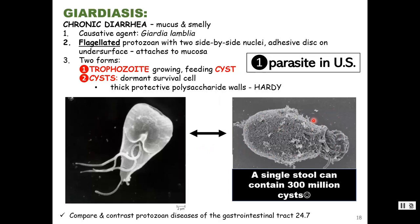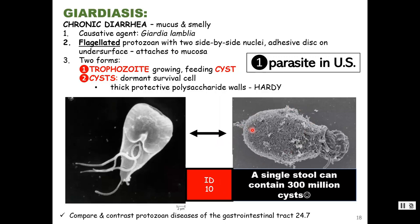A single stool sample can contain 300 million cysts. It only takes 10 to give you the disease — an infectious dose of just 10, which is a very low infectious dose. The cyst stage is very hearty — it can live for greater than two months in cold water outside. The trophozoite is the active feeding stage; the cyst is a dormant, hearty environmental survival structure.